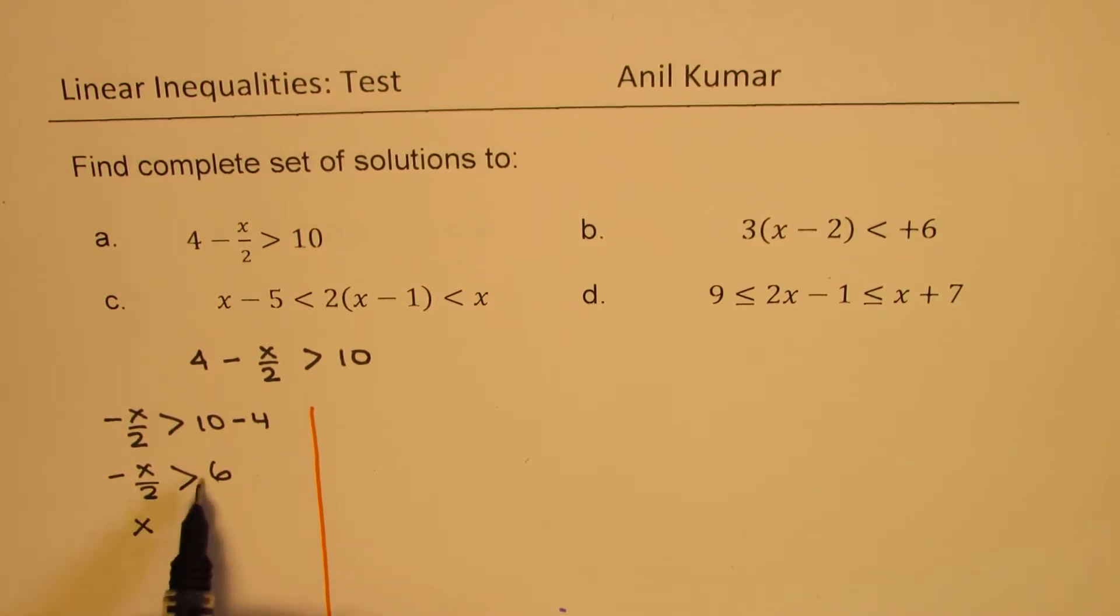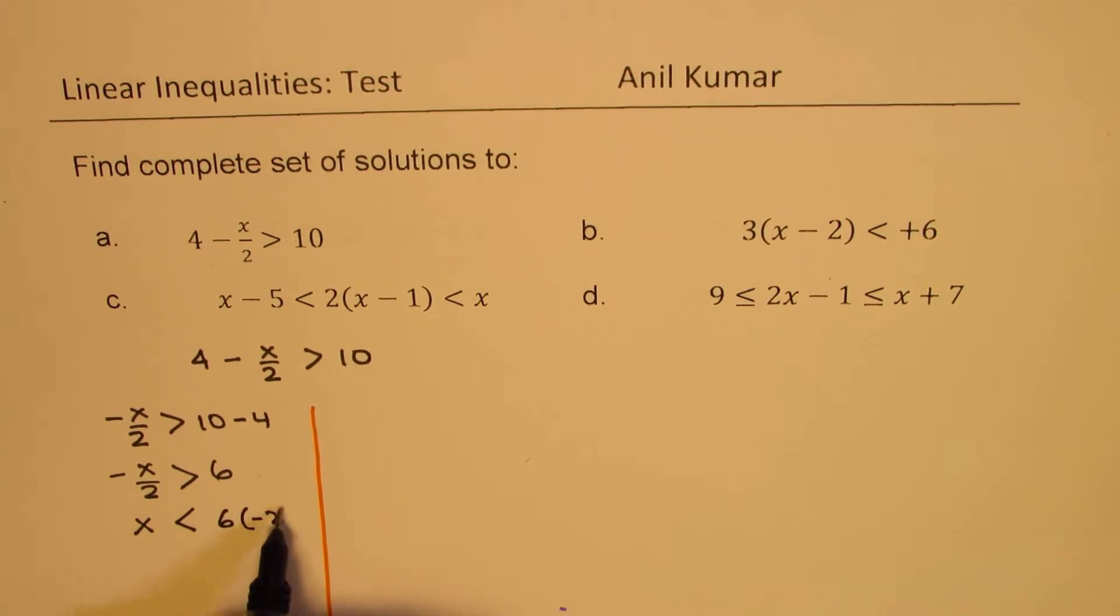When you're multiplying by minus 2, the sign will flip. And so we get 6 times minus 2, which means x is less than minus 12. That is how you're going to solve it.